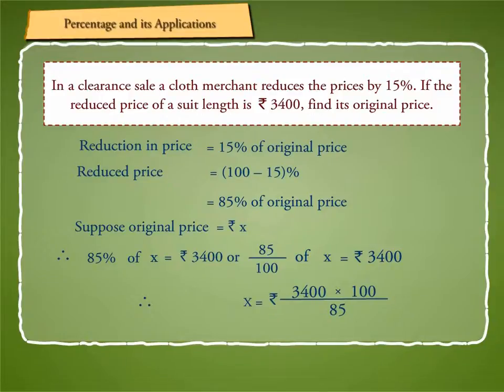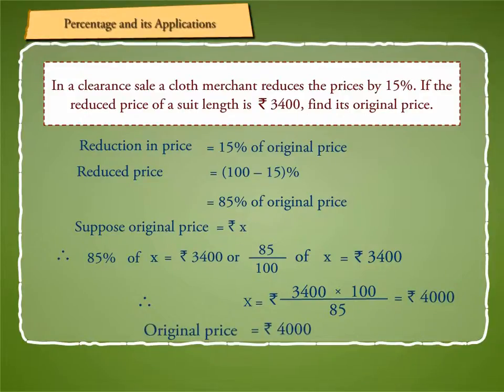Therefore, X is equal to Rs. 3,400 into 100 by 85, which is equal to Rs. 4,000. Hence, original price is equal to Rs. 4,000.